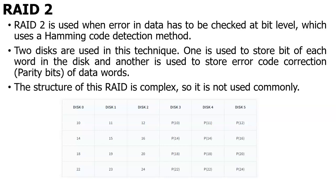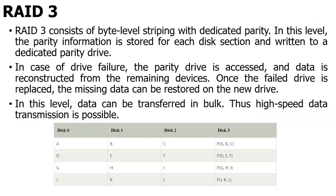So I have disk 0, disk 1, disk 2. For disk 0, I have disk 3 which stores the parity value of that data. And for disk 1 data, I have disk 4 which has the parity bits. So for disk 2, we have disk 5. Similarly, based on the parity bits, I can retrieve the data.